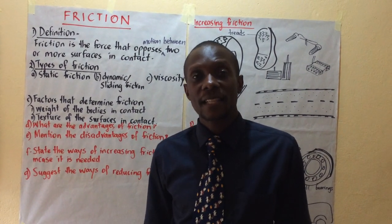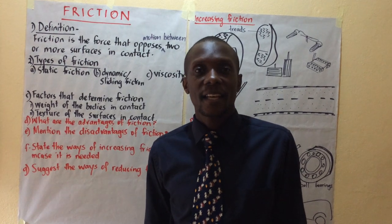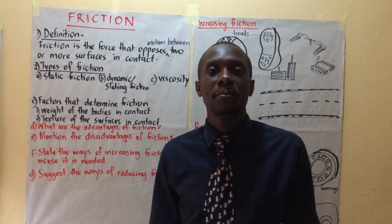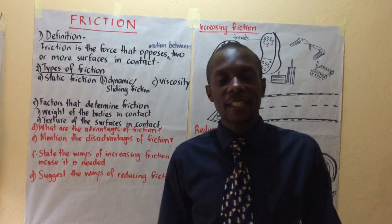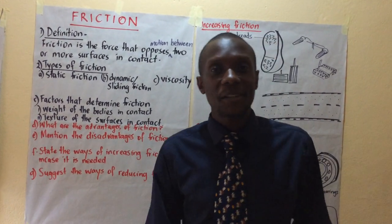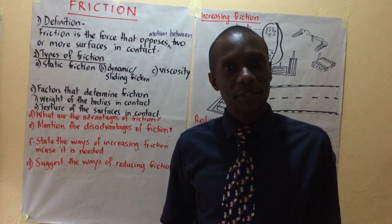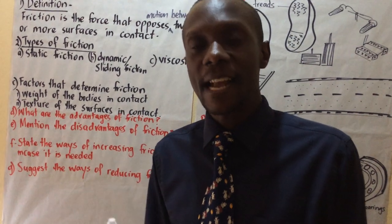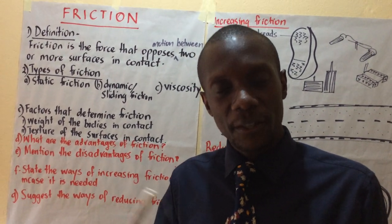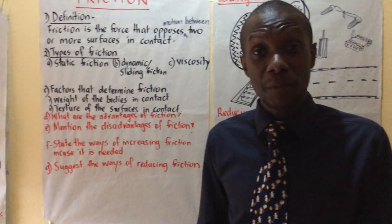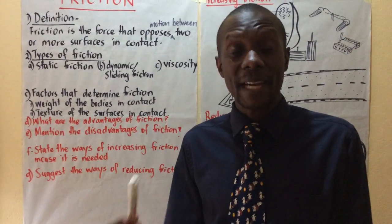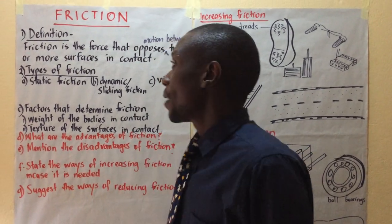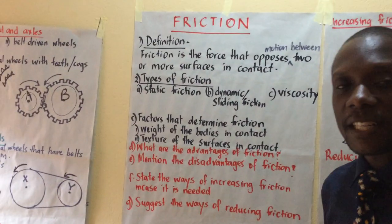We shall also look at the disadvantages of friction — normally they use the term 'nuisance' for this: ways in which friction is a nuisance, ways in which it becomes a problem. Then we shall look at ways of increasing friction in case it is needed and we do not have enough of it, and then ways of reducing friction, because sometimes it is a nuisance and we might want to reduce it.